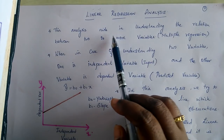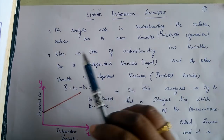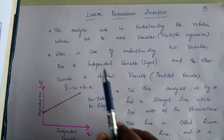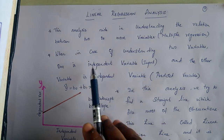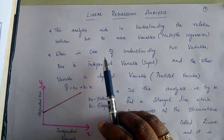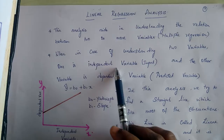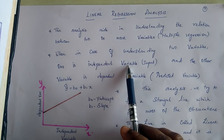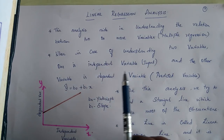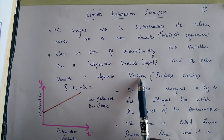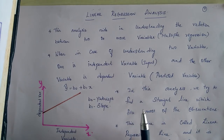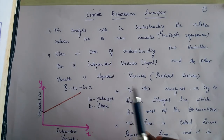When we have more than two variables, we call it multiple regression. When finding the relationship between two variables, one variable is an independent variable, which is normally the input, and the other is a dependent variable, which is the output variable that will be predicted from the input variable.